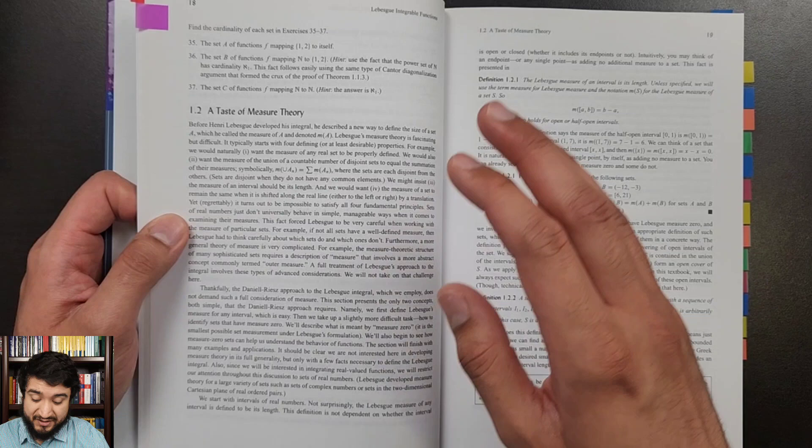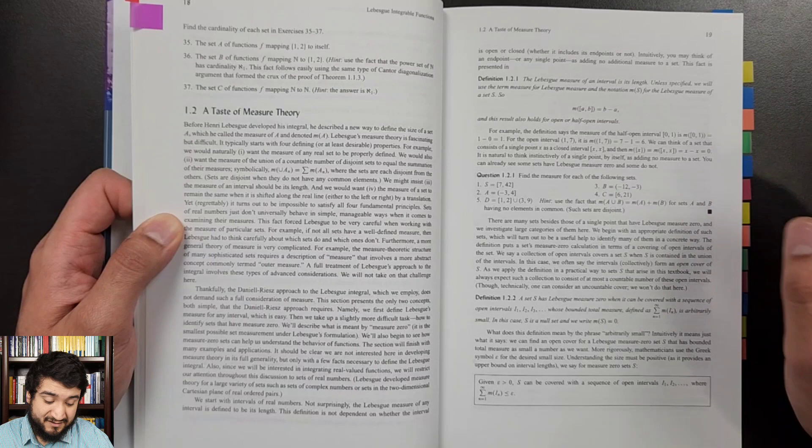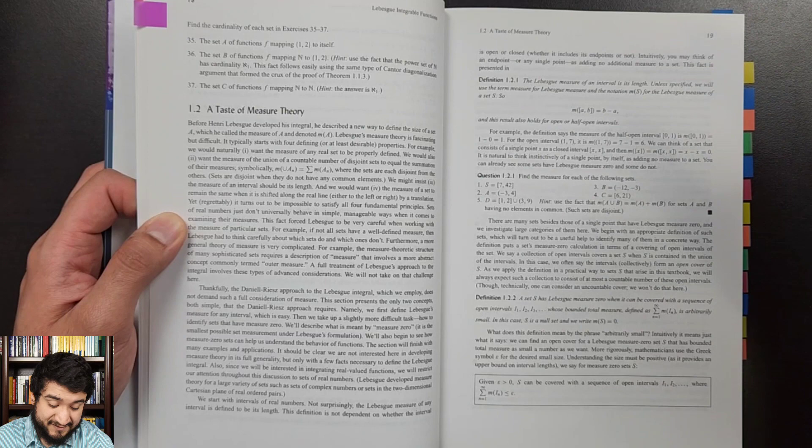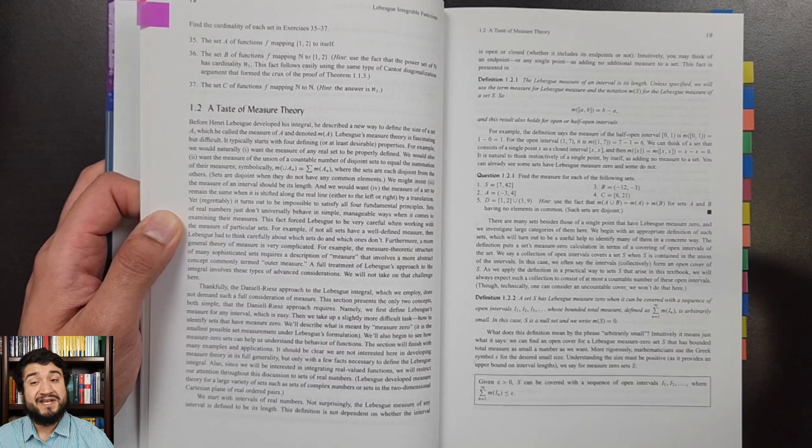Section 1.2, a taste of measure theory. This is really going to set the tone for the rest of the book in terms of the author's writing style. Definitions, and then what I love about this book, the writing style is superb. This book is near perfect, it's a very easy 9 out of 10 at the bare minimum.